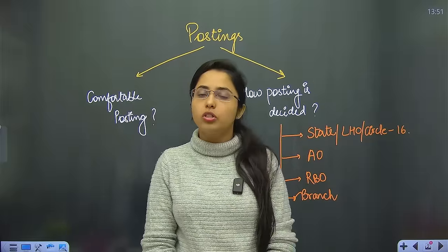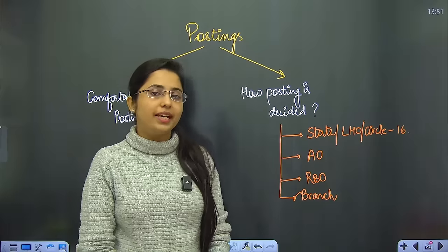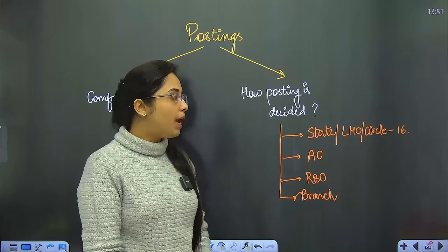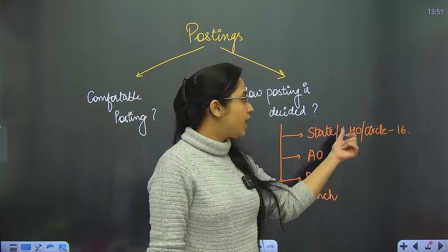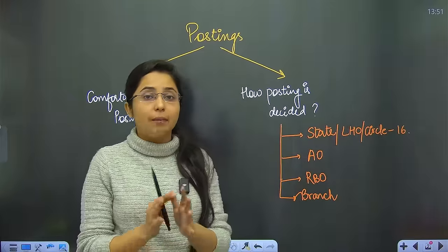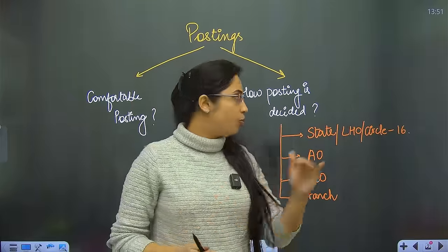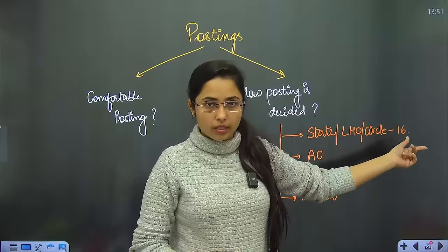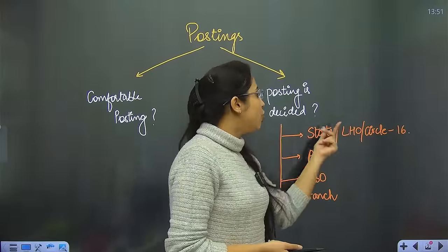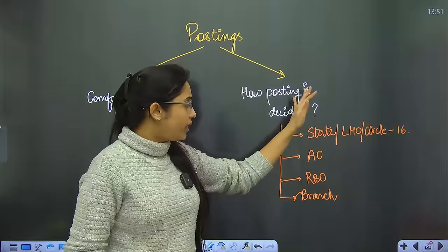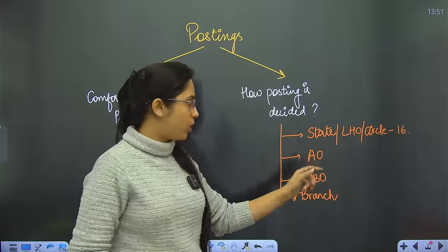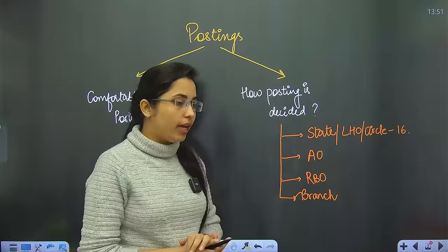The SBI clerk form is state-wise, so you will get posting in your state. There are LHOs - for example, there are 16 LHOs. This doesn't mean every state will have one. Some states have two or more LHOs because the numbers vary.